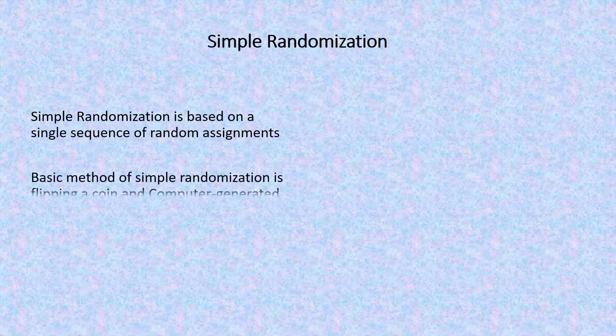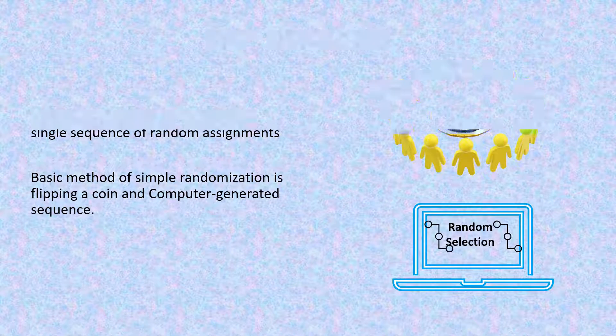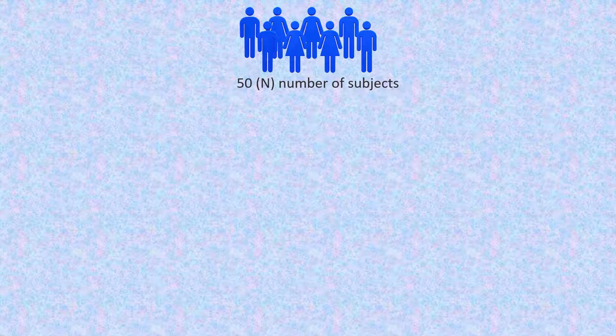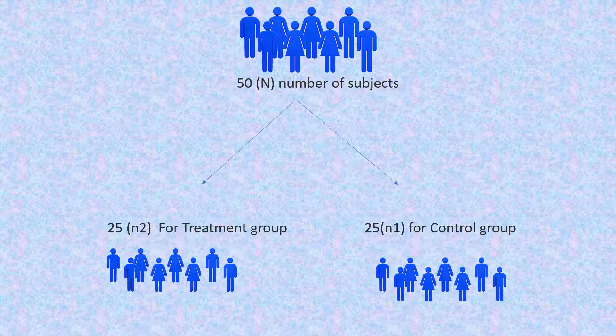Simple randomization is based on a single sequence of random assignments. The basic methods of simple randomization are flipping a coin and computer-generated sequences. If there are 50 subjects, the treatment plans are divided equally — 25 each for the control group and the treatment group. Simple randomization is easy to implement. In large clinical research, it can be trusted to generate similar numbers of subjects among groups. However, results could be problematic in relatively small sample sizes, resulting in an unequal number of participants among groups.